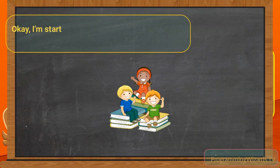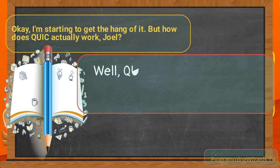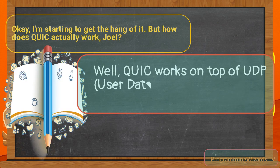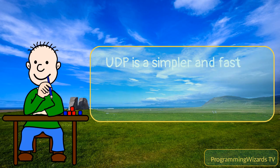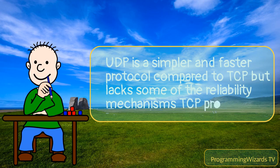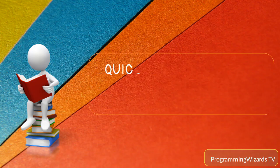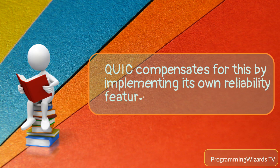Okay, I'm starting to get the hang of it. But how does QUIC actually work, Joel? Well, QUIC works on top of UDP, User Datagram Protocol, rather than TCP. UDP is a simpler and faster protocol compared to TCP, but lacks some of the reliability mechanisms TCP provides. QUIC compensates for this by implementing its own reliability features on top of UDP.